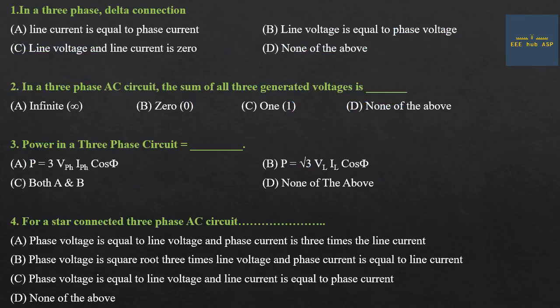First problem: 3-phase delta connection. In delta connection, line current equals root 3 into phase current, and line voltage equals phase voltage. Option B is the answer.